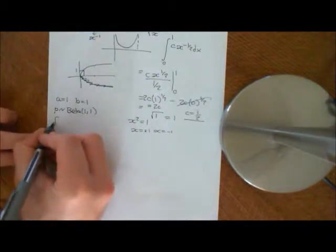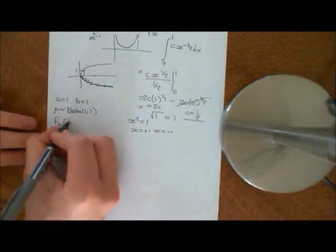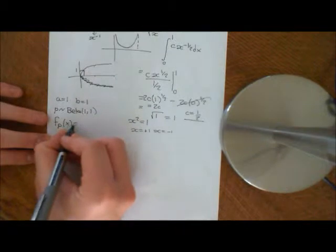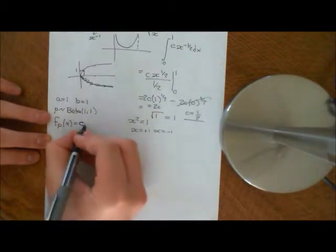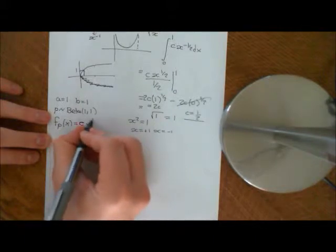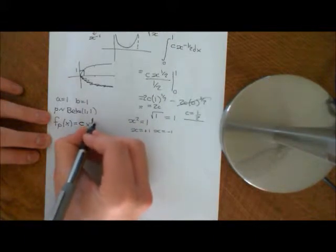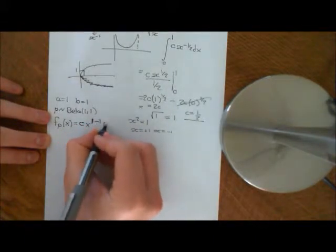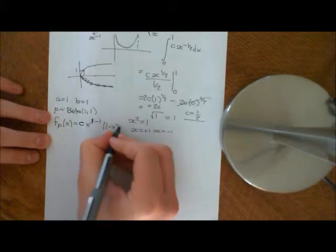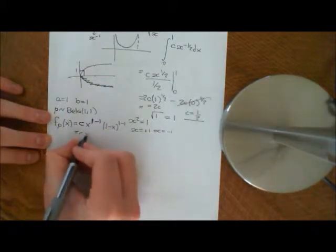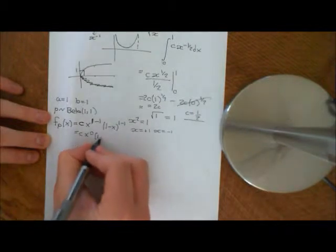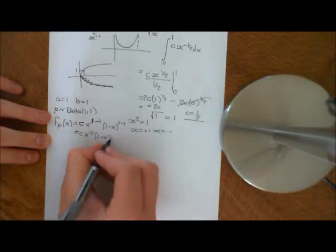That means that the probability density function on the interval (0,1) is going to be equal to some normalising constant times x to the power of a minus 1 — so a equals 1, then we subtract off 1 — times 1 minus x to the power of b minus 1, which is 1 minus 1. So basically we get c times x to the power of 0 times 1 minus x to the power of 0.